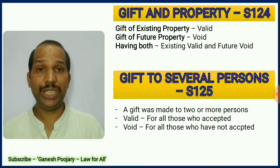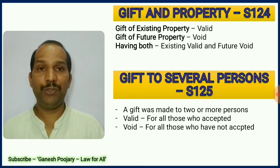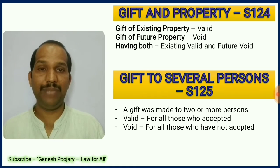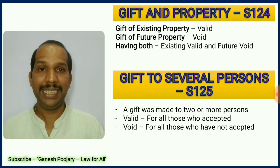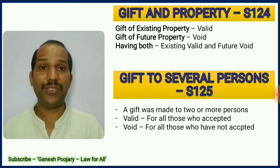Section 124 discusses gift of existing property and future property. If you have gifted something that is existing property, that is a valid gift. If you are gifting something which is not available with you — considered as future property — it is a void gift. If a transaction involves both existing and future properties, then the existing properties are considered a valid gift and whatever is future is void.